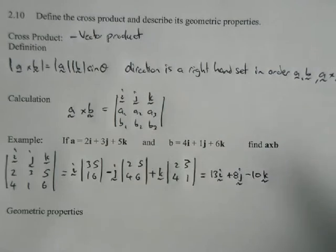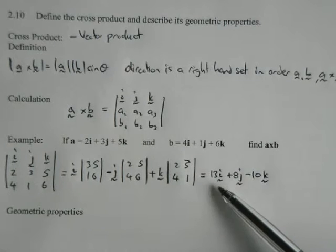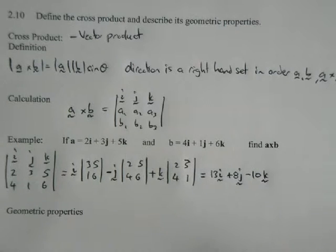And as you can see, that's a vector. It's got something in the I direction, something in the J direction, something in the K direction. So we now have a vector. So when we do A cross B, we get a vector.